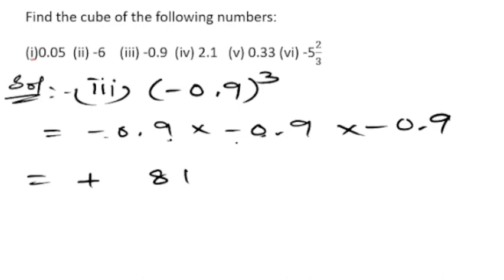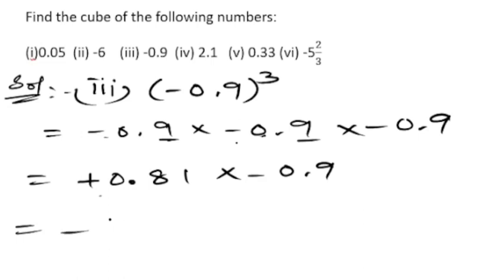We count the decimals — the first one gives two digits after the decimal, and the second gives one, so we are getting three digits total after the decimal. Now multiplying plus 0.81 into minus 0.9: plus into minus is minus. Nine into 81 — nine ones are 9, nine eights are 72 — giving 729. So the answer is minus 0.729.